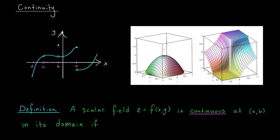More formally, the issue is that as we approach a from the left, the value of the function is different than if we approach a from the right. The limits aren't matching up, and the limit doesn't exist at x equals a. If the limit doesn't exist, the function is definitely not going to be continuous.